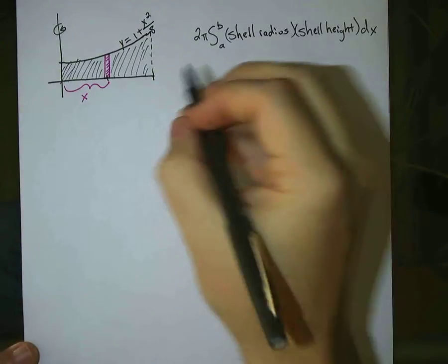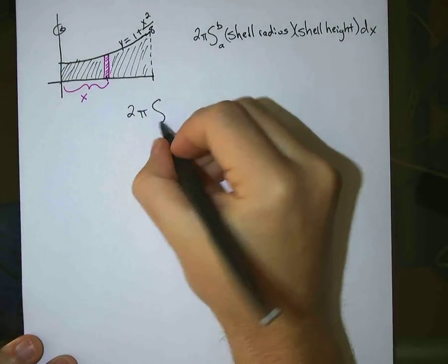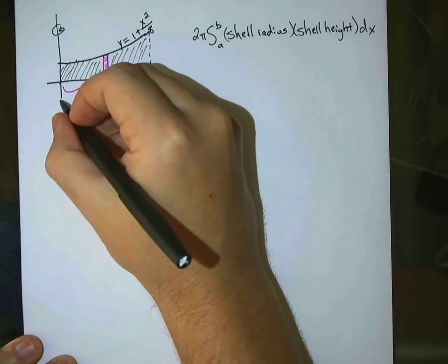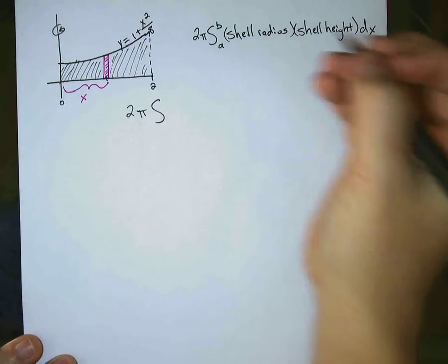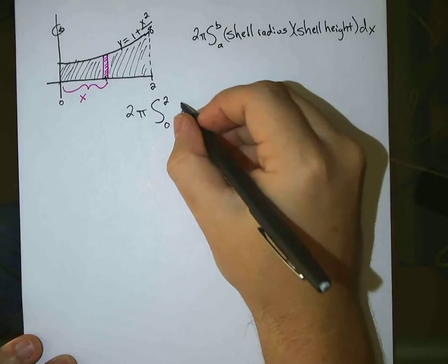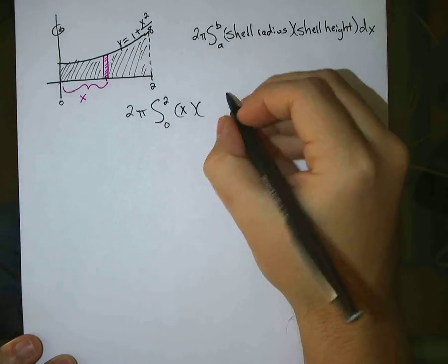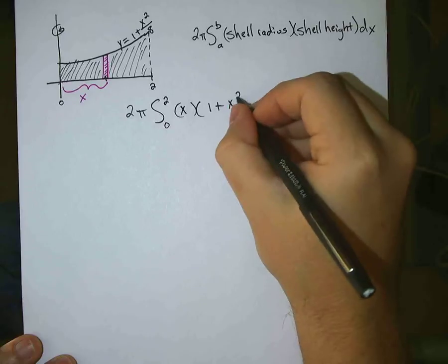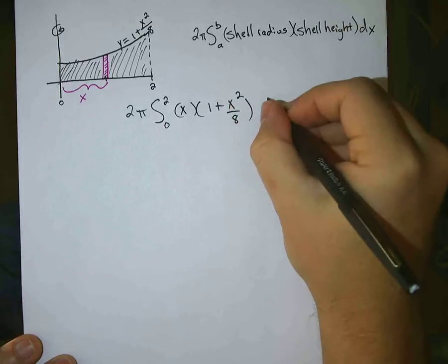Okay, so we put that into the formula here, this is going from 0 to 2, in case you can't see my markings there, so 0 to 2, shell radius is x, shell height is 1 plus x squared over 8, all with respect to x.